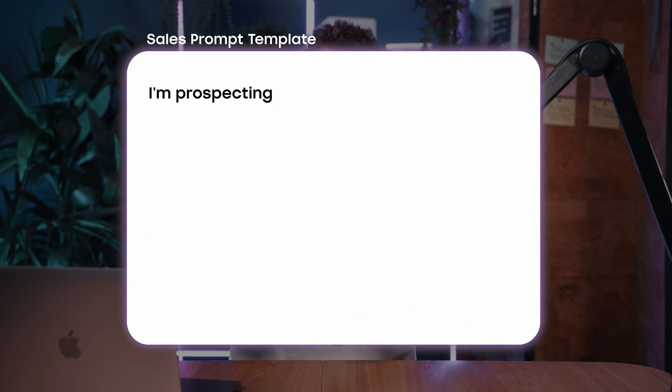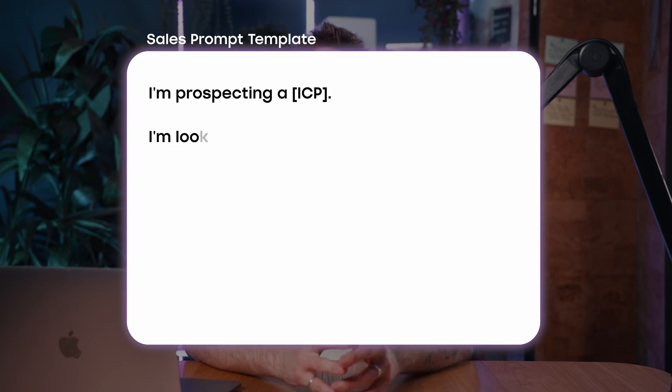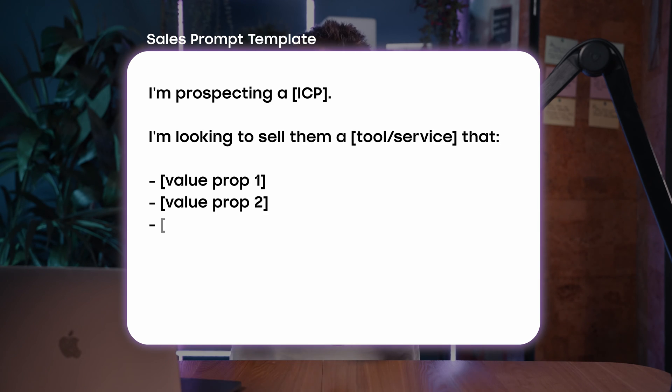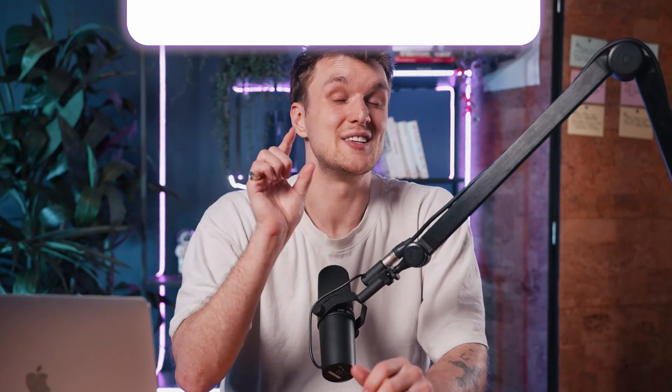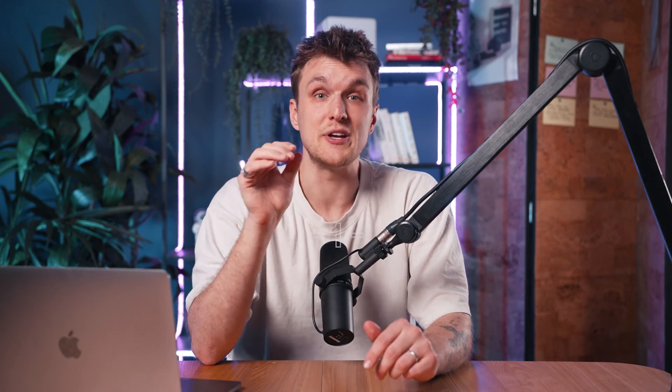It looks something like this: I'm prospecting an ICP, and I'm looking to sell them a tool or service — insert as many value prompts as you can. The reason is, ChatGPT knows so much about your ICP already. What it doesn't know very well at all is who you are and what you do, or the perspective you want this data from. So tell it in as much detail as possible.